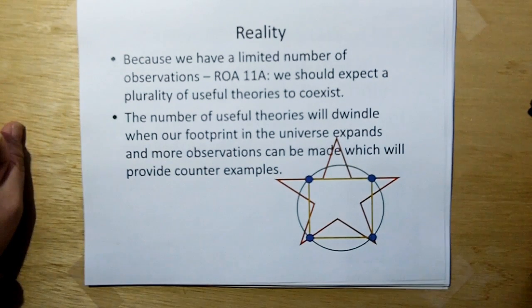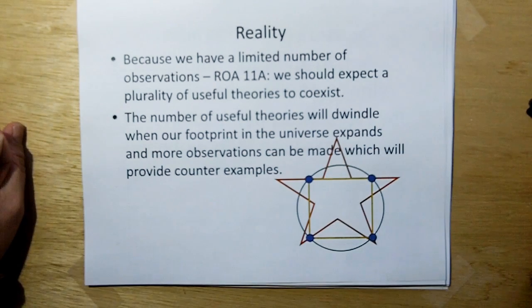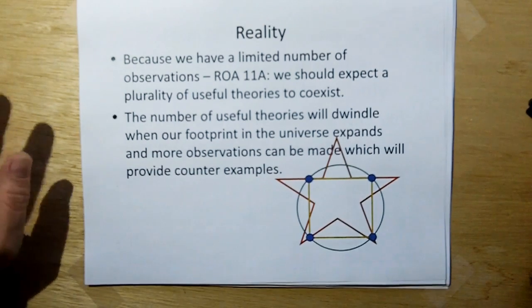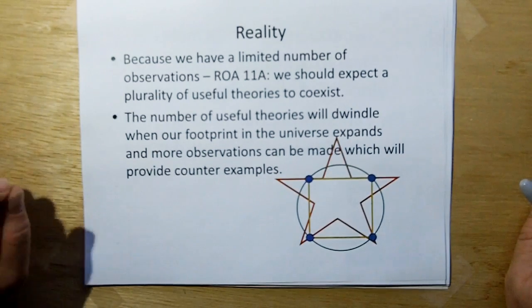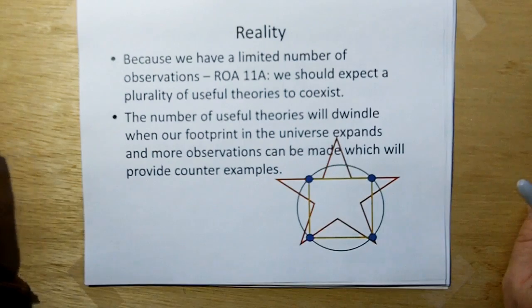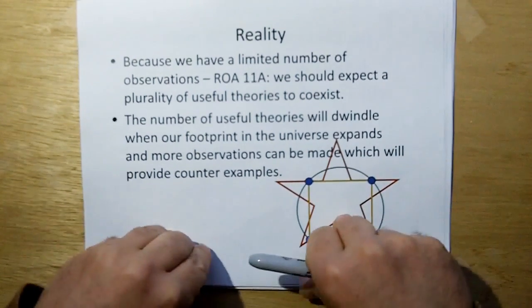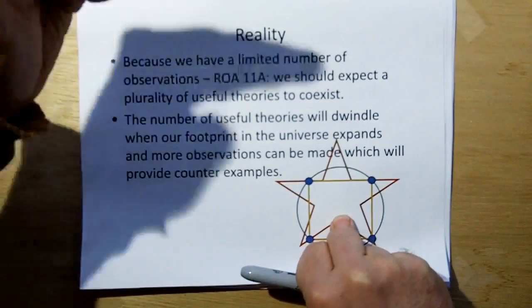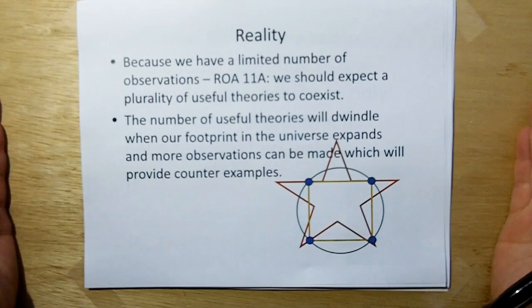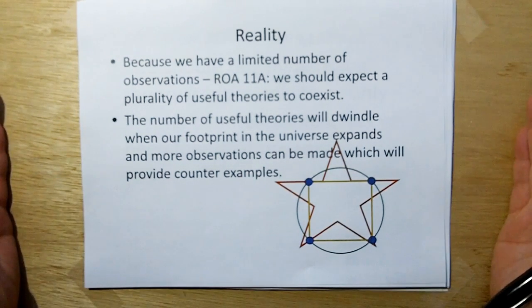This idea of monotheorism where there's only one theory and that we could possibly know what that is right now is complete and utter bullshit. But, the number of useful theories will dwindle when our footprint in the universe expands and more observations can be made which provide the counterexamples to the other theories that we are presently coexisting peacefully. So, as we progress, we'll start dwindling those coexisting theories down. We should not automatically assume that one of them we know now is irrefutable and all the rest are crackpot theories.